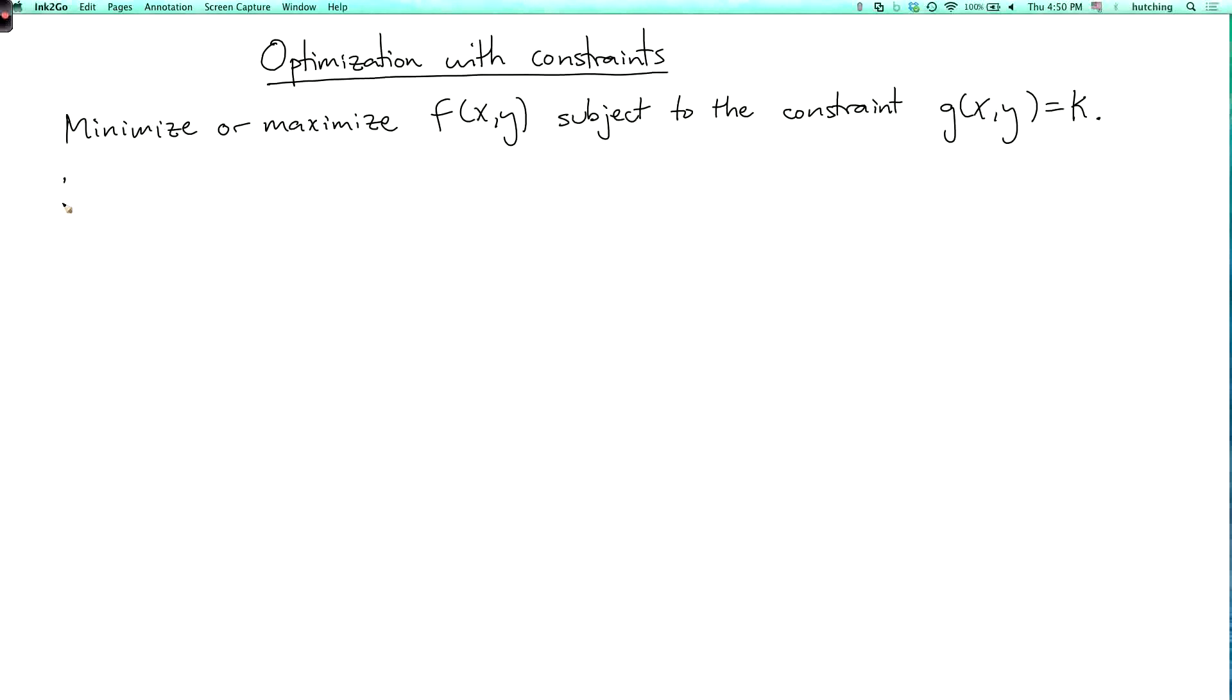So let's do an example. Let's find the isosceles right triangle with hypotenuse 10 with the largest possible area.